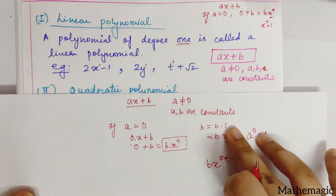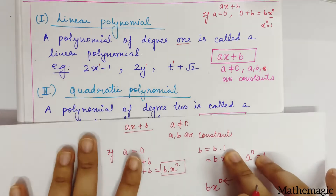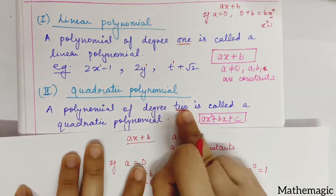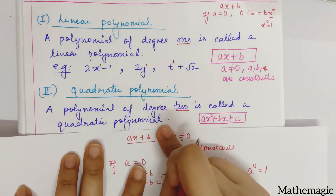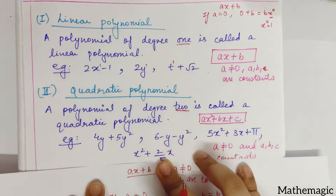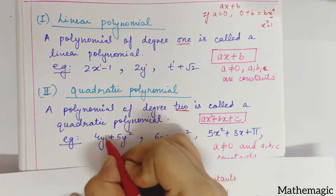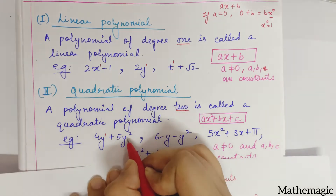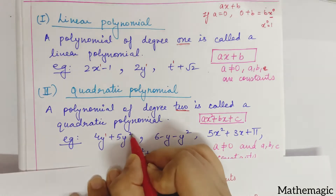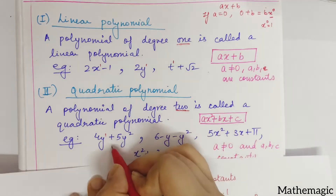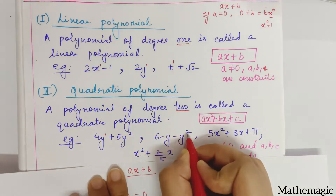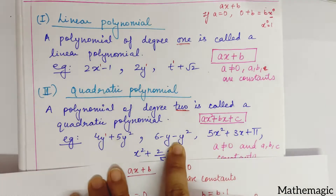Now we will move on to the second type, that is the quadratic polynomial. A polynomial of degree 2 is called a quadratic polynomial. For example: 4y plus 5y squared — y's power is 1 here and y's power is 2 here. For the degree, we find the highest power of the variable; the highest exponent is 2, so degree is 2, so this is a quadratic polynomial. Another example: 6 minus y minus y squared — again degree is 2, so this is also a quadratic polynomial.